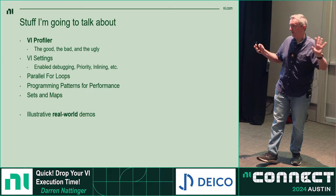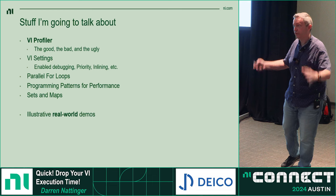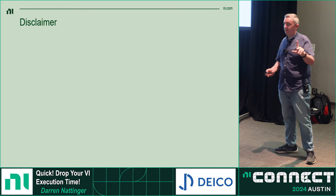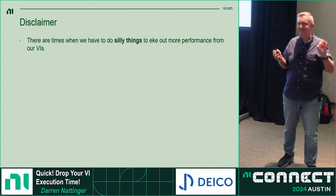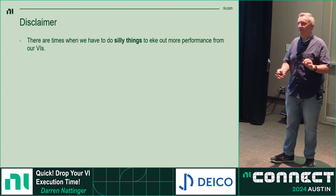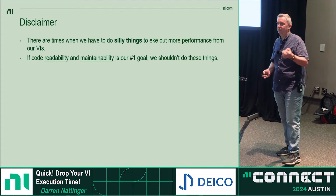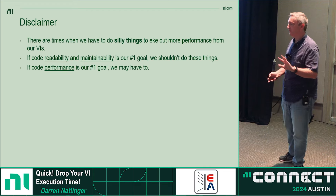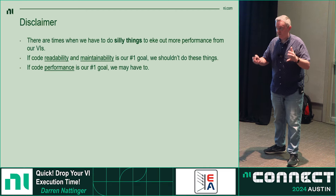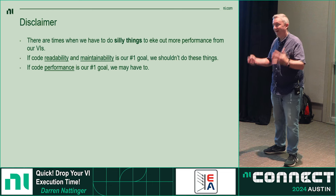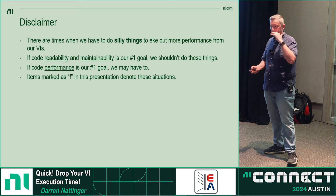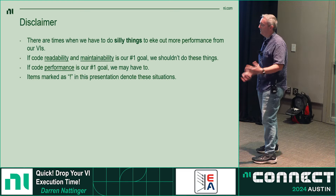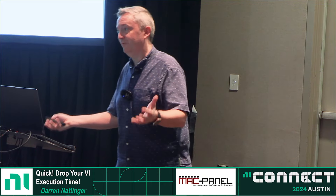After the slides, I have some real-world demos — actual slow VIs that people came to me with that I was able to speed up using the techniques described here. One disclaimer: sometimes there are silly things we have to do in LabVIEW to get VIs to run faster. If your number one goal is maintainability and readability, you shouldn't have to do these things. But if performance is your number one goal, sometimes you have to do silly things. Whenever I cover one of those, it will have an exclamation mark next to it.